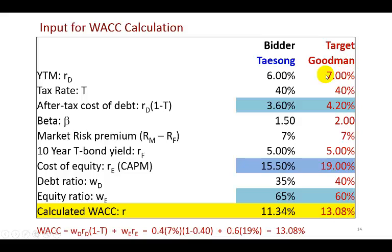For this analysis, the cost of debt for Goodman is 7% — that's the yield to maturity on its long-term debt. The tax rate to use is 40%, so the after-tax cost of debt comes out to be 4.20%, which is 7% multiplied by (1 minus 40%).